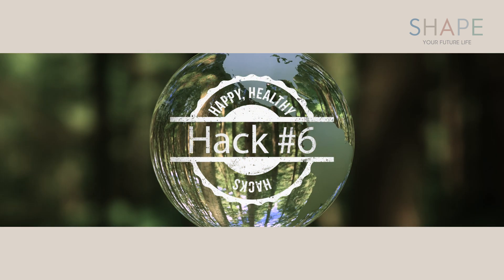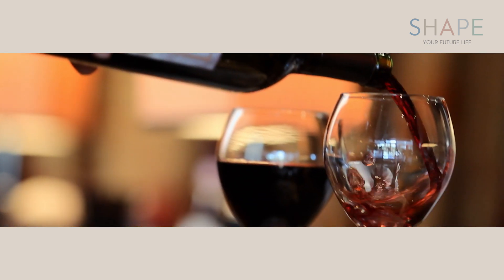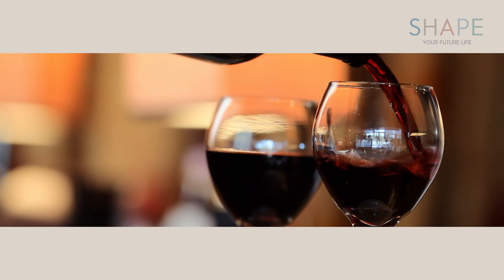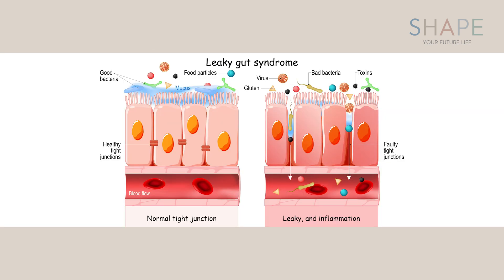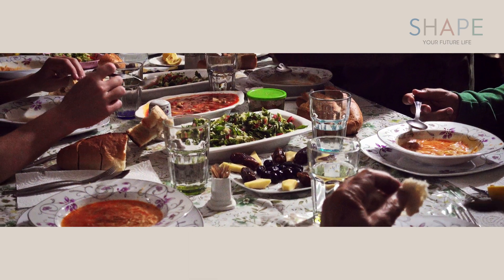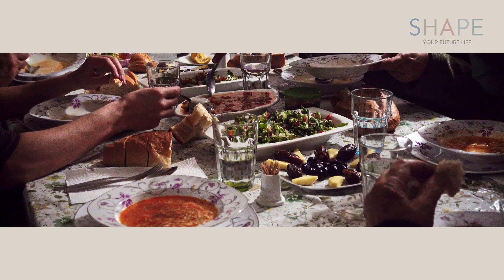Hack 6: Alcohol. Alcohol consumption alters the composition of our gut microbiome. It increases gut permeability and may be associated with escalated gastrointestinal inflammation, which can generate body-wide inflammation. Therefore, reducing or avoiding alcohol can benefit our gut microbiome.